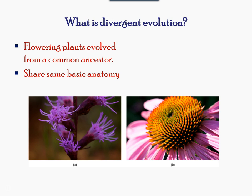Sometimes during evolution, species evolve in different directions from a common point. This is called divergent evolution. Divergent evolution is the process of tracking back two or more species to a common ancestor.